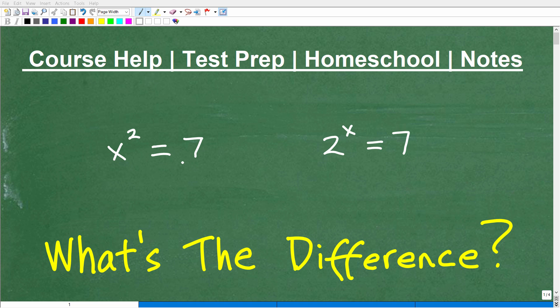Okay, so we have two equations, and they look kind of similar, right? We have this equation here and this equation here. They have the same variable x and the same numbers, 2 and 7, but of course the arrangement is a little bit different. But my question to you is, what's the difference? What's the difference between these two equations?